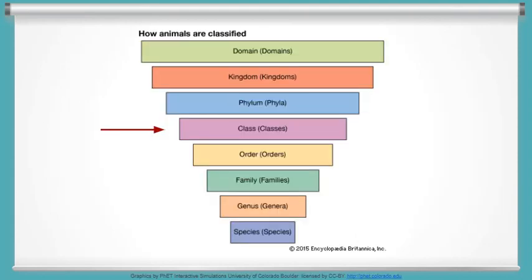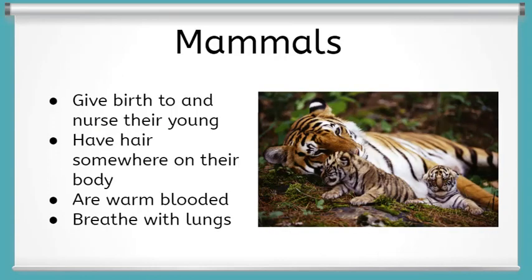Now that we have discussed taxonomies and their use, let's take a closer look at animal classes. Mammals, one type of animal class, are identified by scientists through a number of traits. Mammals give birth to and nurse their young, have hair either on sections or covering their entire body, are warm-blooded, and breathe through lungs. Examples of mammals that you might know include tigers, squirrels, whales, and humans.